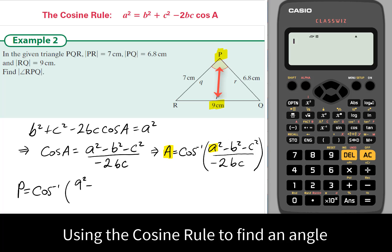The other two sides, b or c, are interchangeable. So, 9 squared minus 7 squared minus 6.8 squared, divided by 2 times 7 times 6.8.